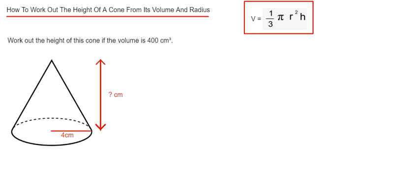Before you start you need to know the formula for working out the volume of a cone, which is in the red box here: V equals a third times pi times R squared times by H, which is the height. V and R are the volume and the radius of the cone.